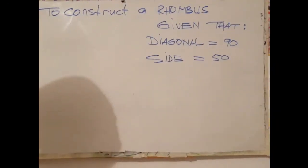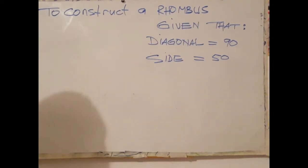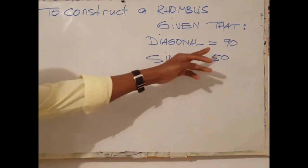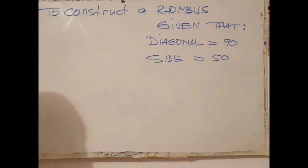Welcome back to another video. At the end of this class you should be able to define rhombus. You should also be able to construct a rhombus when given the diagonal and the length of one side. What's a rhombus?